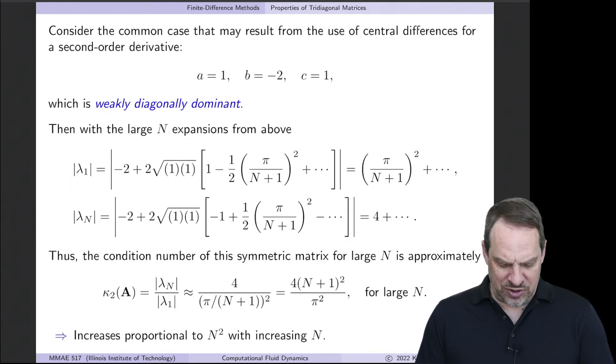So for these values of a, b, and c, λ_1, substitute them in and simplify to get the first term. We get the square of π/(N+1). And then for the other one, |λ_N|, again put in the values of a, b, and c. The first term is going to be 4. You can see that here, 2 times the square root of 1 times 1, that's just 2. 2 times -1 is -2. -2 - 2 is -4. Take the absolute value, and that's 4. So that's the first term.